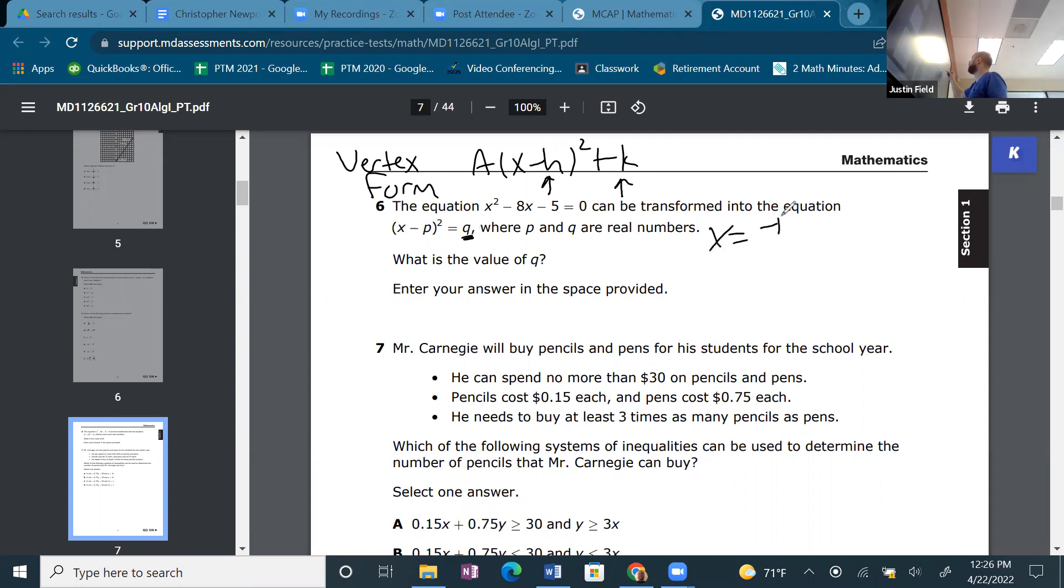But we can still start off with our -b/2a, okay? And so that would be -(-8), or 8, over 2a is 2 × 1 = 2, and that's just 4. So we already got, we already got 1. So if I ask for p, we'd be done.